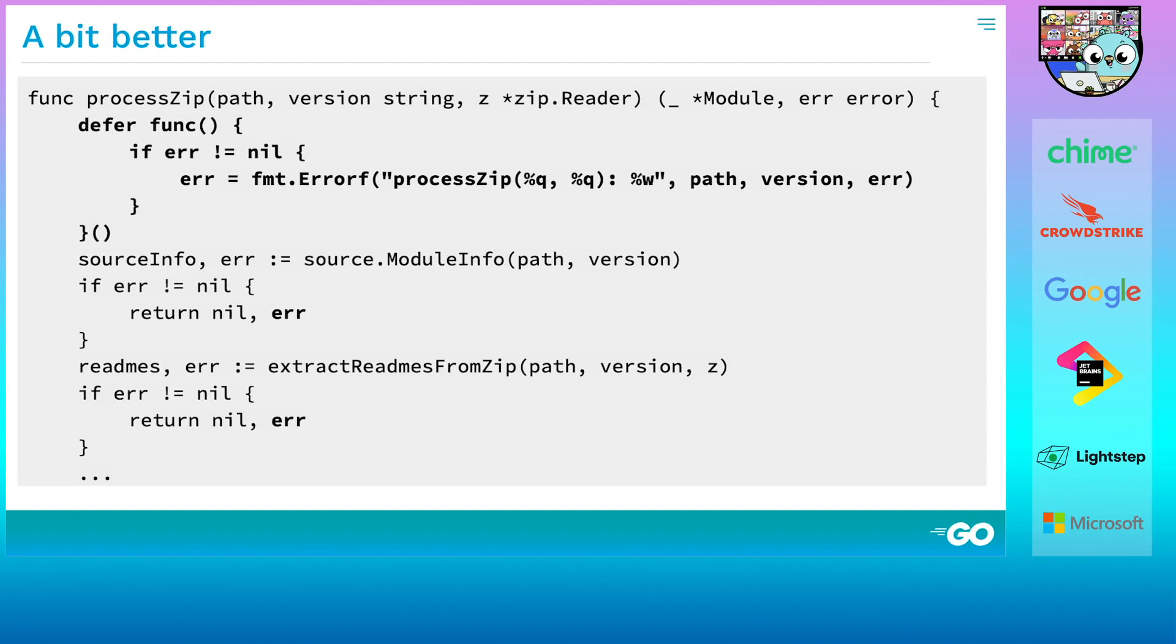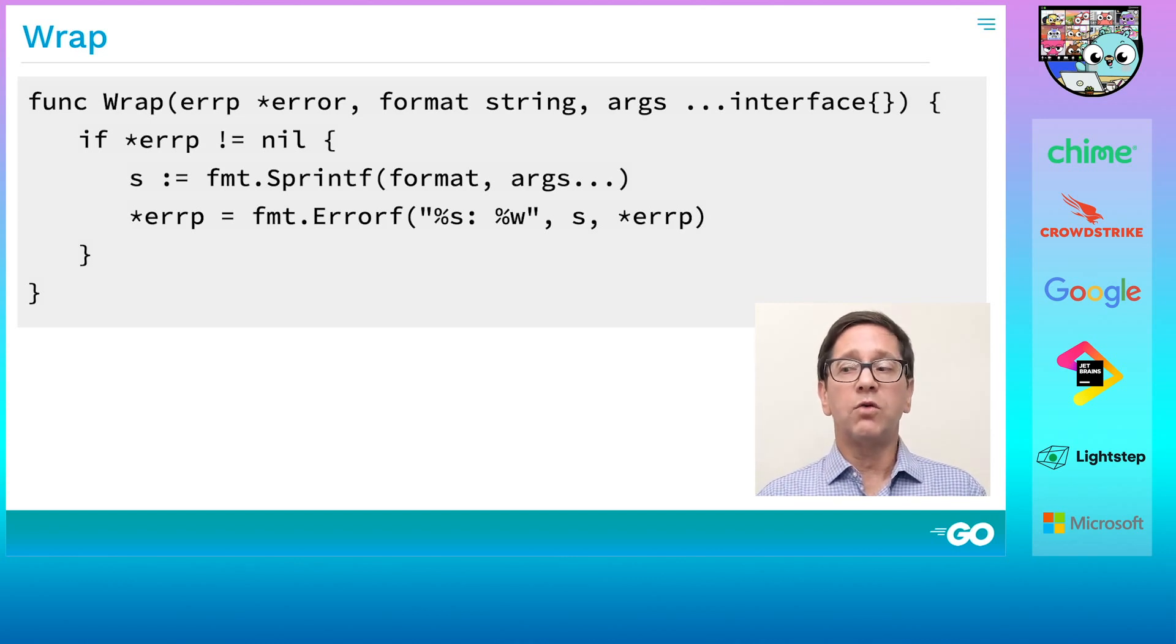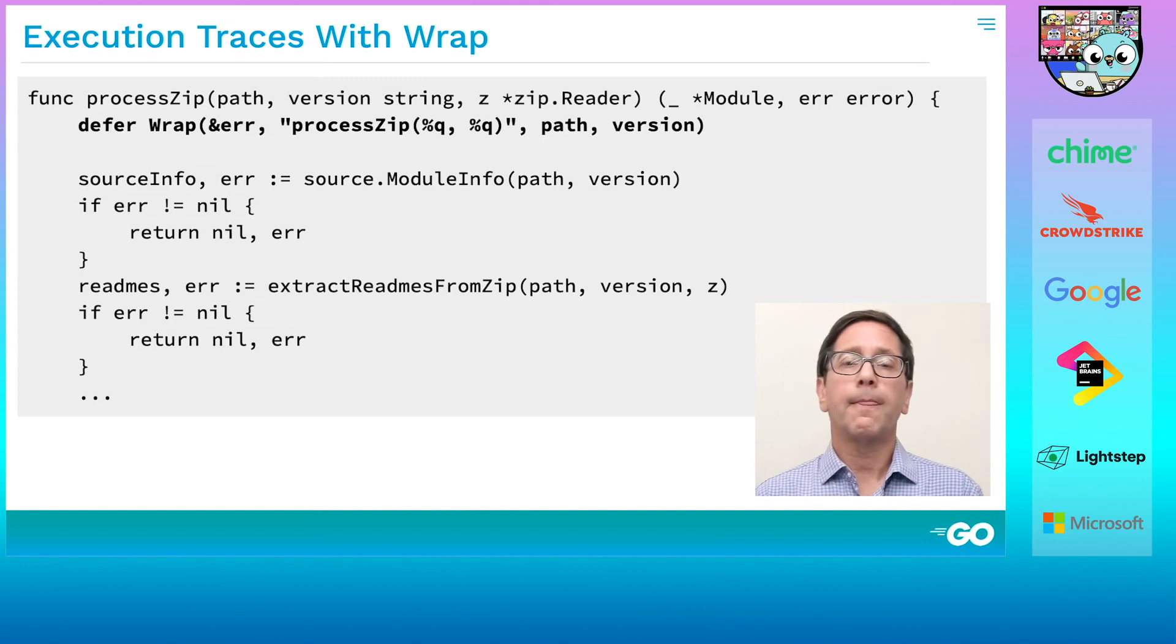The defer checks if the error is not nil, and if it isn't, it wraps it with the function name and the interesting arguments. Now, even though there's only one defer per important function, this is still too verbose. So we broke out the body of that defer into its own function, which we call wrap. Wrap takes a pointer to an error along with printf style arguments. If the error isn't nil, wrap assigns a new wrapped error to it. You'll notice that wrap uses %w, so it always exposes the underlying error. We always do that because our errors are only for our own consumption. But you may also want to have on hand an alternative version of wrap that uses %v to avoid exposing implementation details to others, as we discussed earlier. So this is what our code actually looks like. At the cost of one line of code and named return values, we get our own custom stack traces complete with arguments.